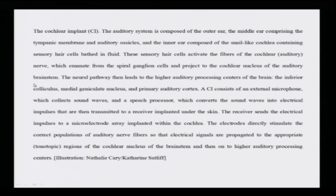This is how the cochlear implant looks. The auditory system is composed of the outer ear, the middle ear comprising the tympanic membrane and auditory ossicles, and the inner ear — a snail-like cochlea containing sensory hair cells bathed in fluid. The sensory hair cells activate fibers of the cochlear nerve emanating from the spiral ganglion cells, which project to the cochlear nucleus of the auditory brain stem — the neural pathway leading to higher auditory processing centers: the inferior colliculus, medial geniculate nucleus, and primary auditory cortex.